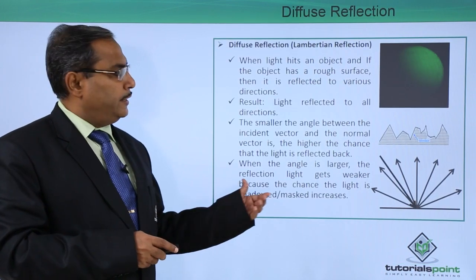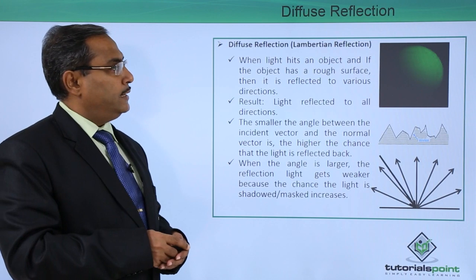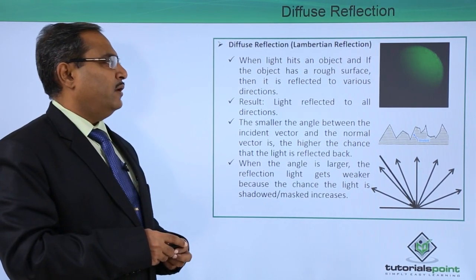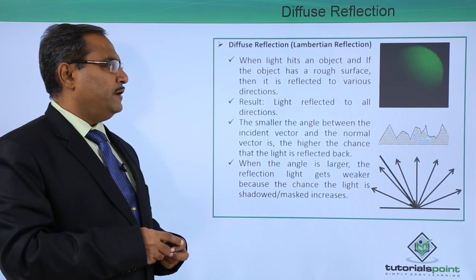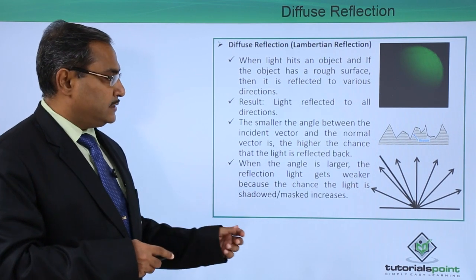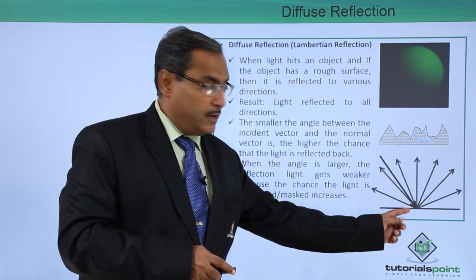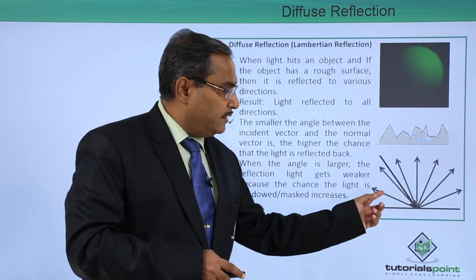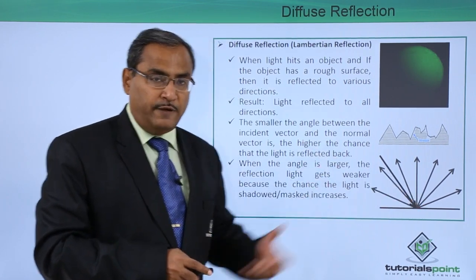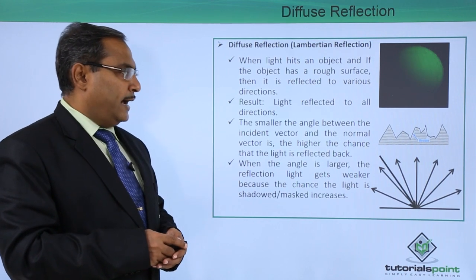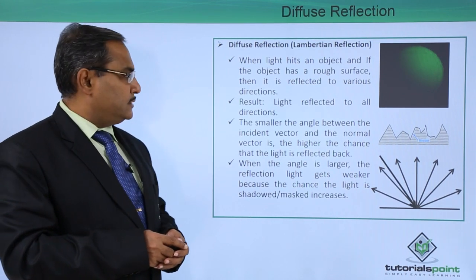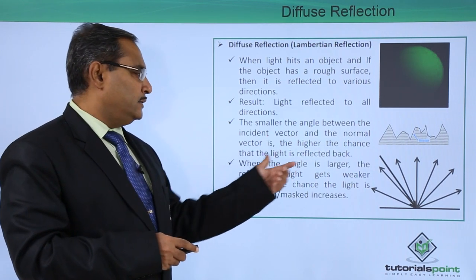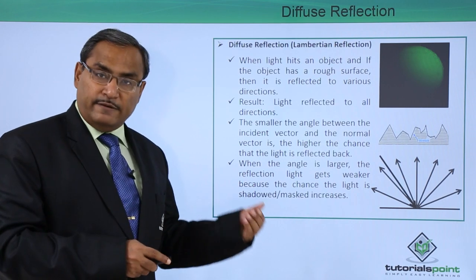Now we are concentrating on diffuse reflection, that is the Lambertian reflection. When light hits an object with a rough surface, it is reflected in various directions. This is the incident light, and this object has a rough surface. Due to this roughness, the reflected light is obtained in various directions — light is reflected to all directions. The smaller the angle between the incident vector and the normal vector, the higher the chance that the light is reflected back.